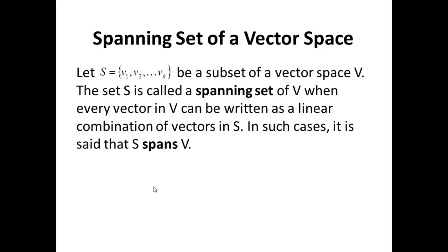Spanning set of a vector space. Let S equals {V1, V2, ..., VK} be a subset of the vector space V. Then we say that S is a spanning set of V, or S spans V, if every vector in V can be written as a linear combination of the vectors in S. So if I pick any vector V in V, I must be able to write it as a linear combination of the vectors in S.